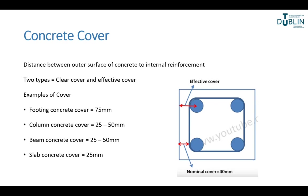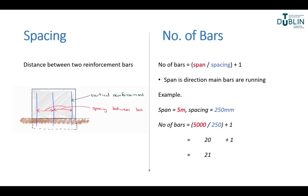Concrete cover is a very important concept. There are two different types: effective cover and nominal cover. Effective cover is the distance from the outer surface of the concrete to the centre point of the rebar, whereas the nominal cover is from the surface of the concrete to just the surface of the rebar. Examples: footing cover could be 75mm, beam could be 25 to 50mm. Make sure you know which type of cover you're talking about.